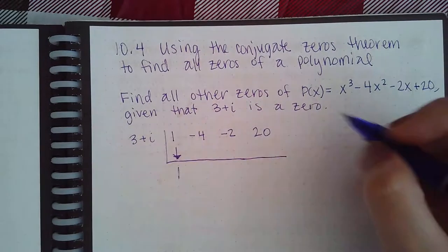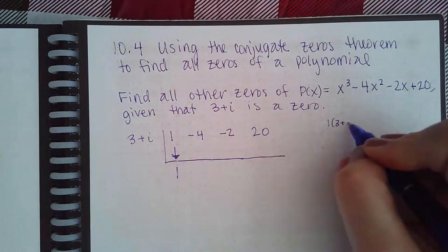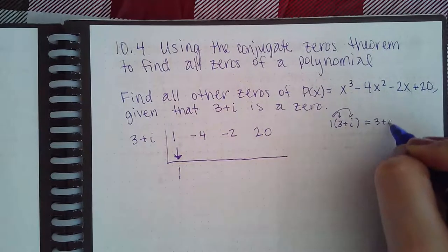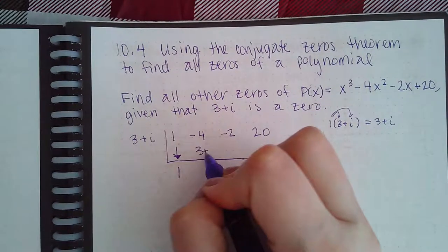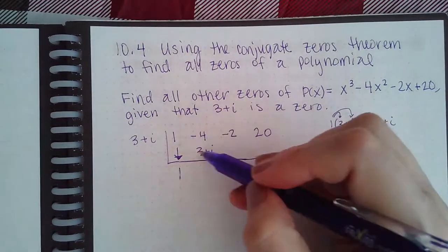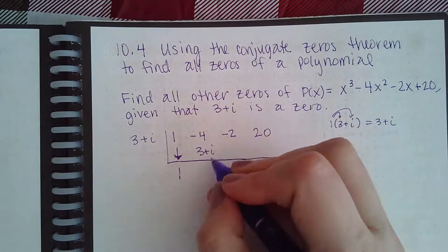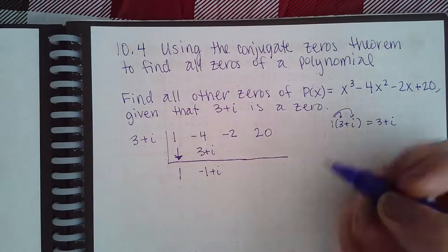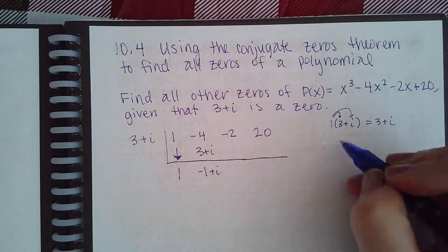This times this - what is 1 times 3 plus i? You're just distributing a 1, so it's 3 plus i. 3 plus i goes underneath here. You combine the real parts together; the imaginary part doesn't have a like term, so that part will just come down. Then it's a matter of multiplying these two things together.